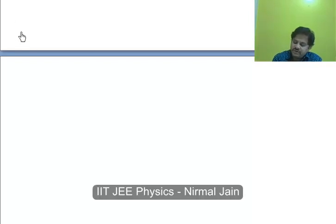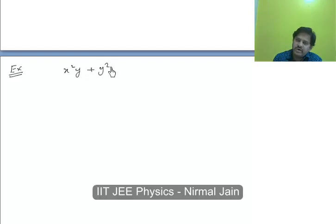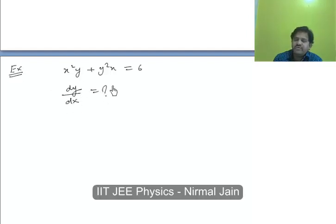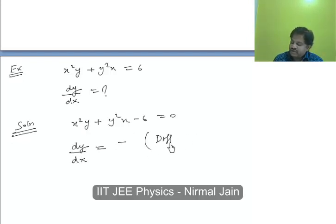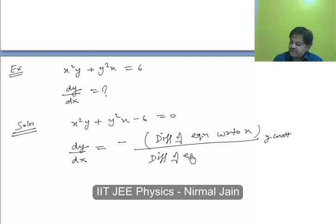Let's understand the concept of implicit function differentiation with one more example: x squared y plus y squared x equals 6. We are asked to find dy/dx. We first follow step 1, which is to take all the terms to the LHS. Now in order to find dy/dx, we use differentiation of the equation with respect to x keeping y as constant in the numerator, and differentiation of the equation with respect to y keeping x as constant in the denominator.